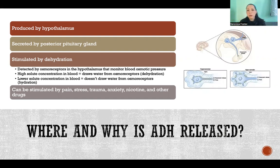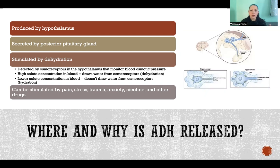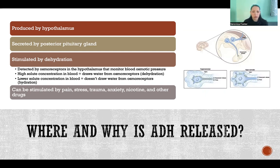If the blood has a higher concentration of solutes, that's going to draw fluid from the osmoreceptors across the membrane — essentially sucking the water out because we're aiming for equilibrium. That water travels across the cell membrane into the blood to equalize solute concentration on either side. If there's a lower solute concentration in blood — meaning more water volume and less concentration — then it doesn't draw the water out of the cell because it's more balanced.